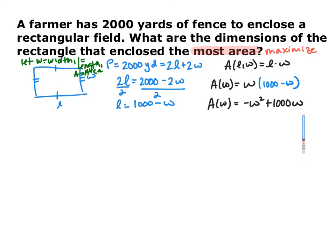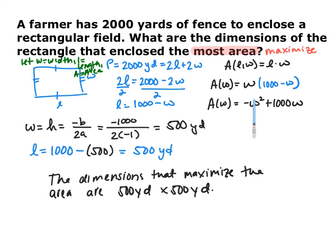Now we have a quadratic, and we can find the maximum. Since the a value is negative, this is a downward-facing parabola, so we want to utilize this function to find the dimensions of length and width that will maximize the area. Go ahead and pause the video and find the dimensions that maximize this parabola. Because this is a parabola, we know how to maximize parabolas — the max is going to occur at our vertex.